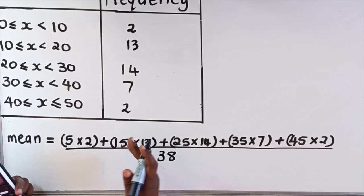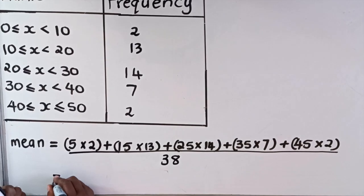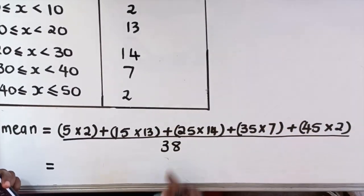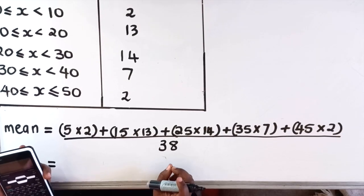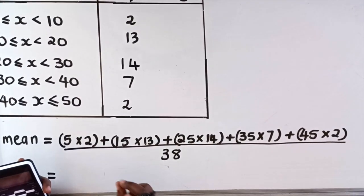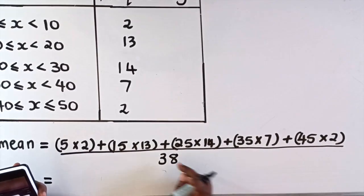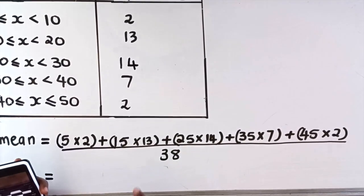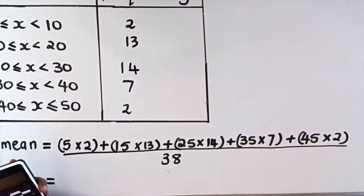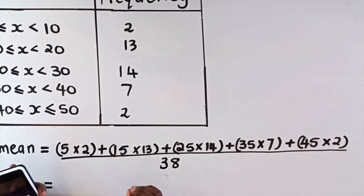So the estimated mean: you want to punch all of that in your calculator and divide it by 38. If you have a natural display calculator, go to fraction pattern and do the numerator with brackets, then divide by 38. If you don't have natural display, it's fine: you say 5 times 2, then plus. The plus makes it multiply first before it adds, so you can do all of that.